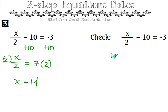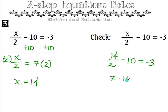Checking: 14 divided by 2 minus 10 equals negative 3. 14 divided by 2 is 7, and 7 minus 10 is negative 3. So it checks.